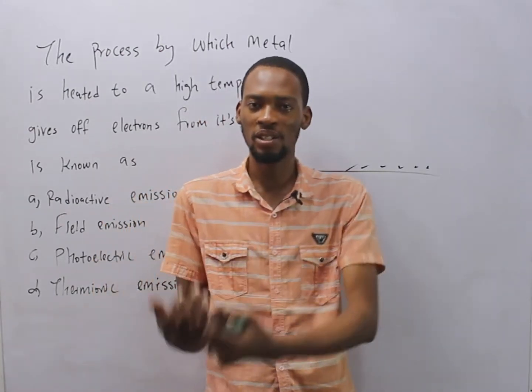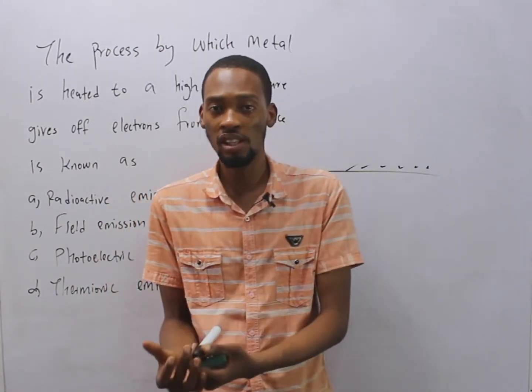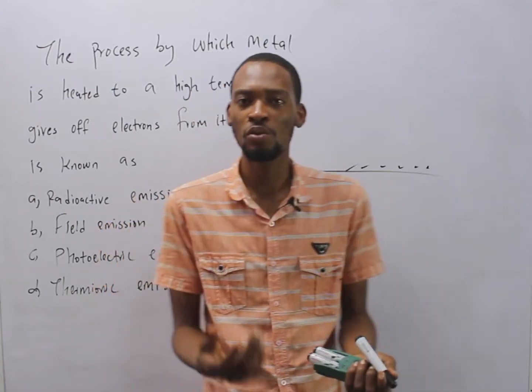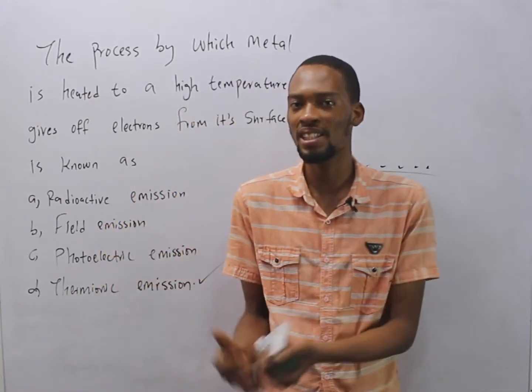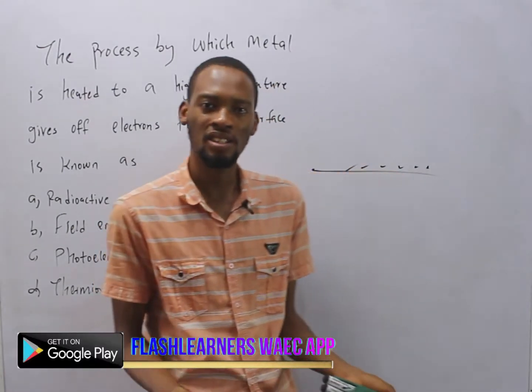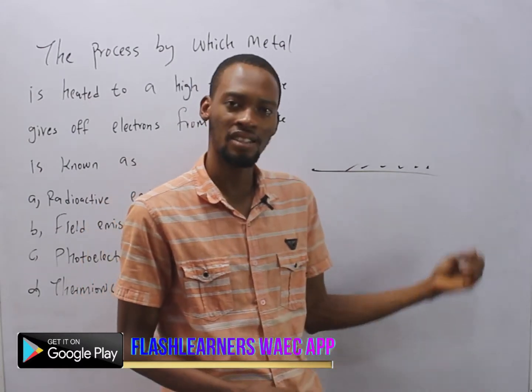In radioactivity, three main particles are given off: we have alpha particles, which are helium nuclei; we have beta particles, which are fast-moving electrons; and we have gamma rays, which are electromagnetic radiation.